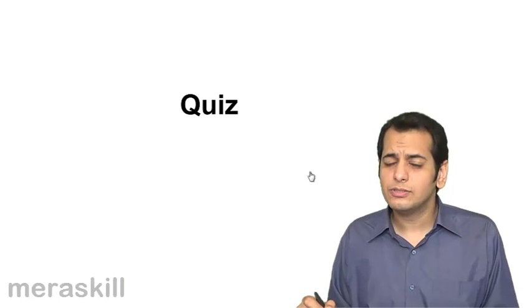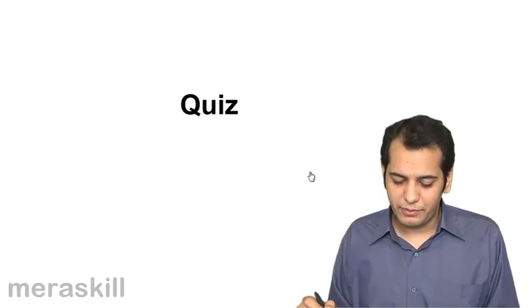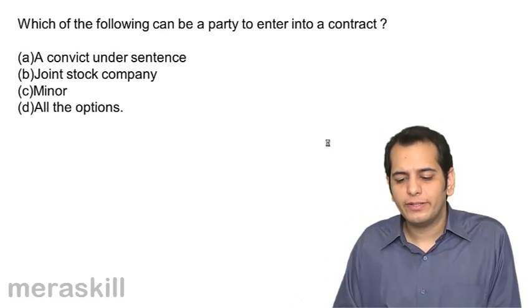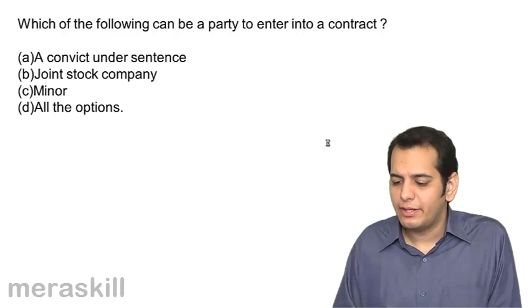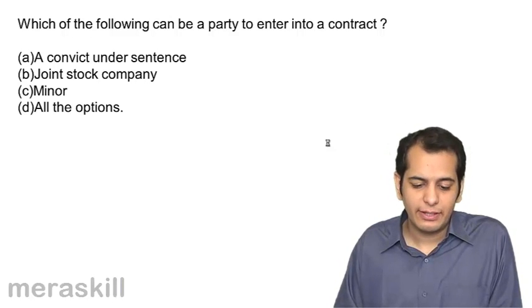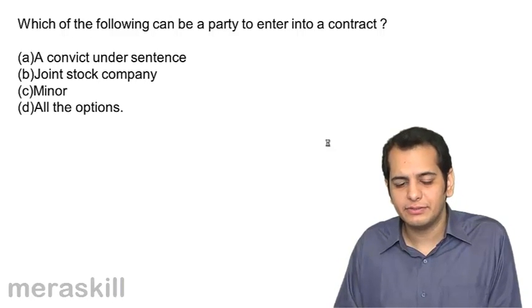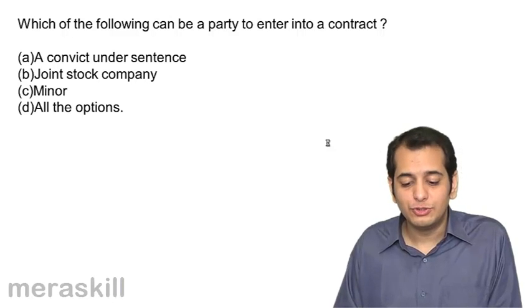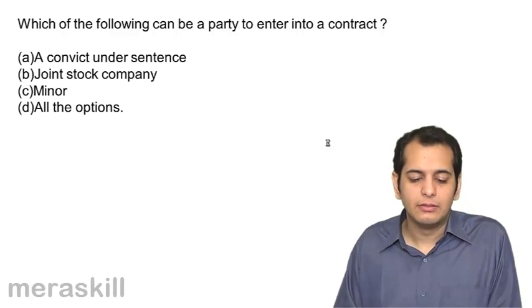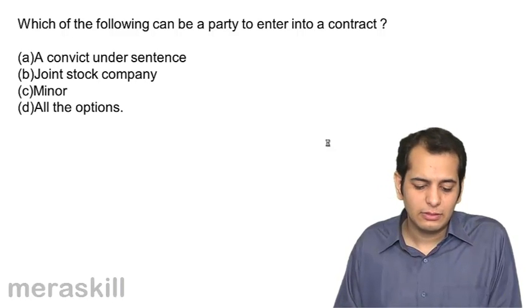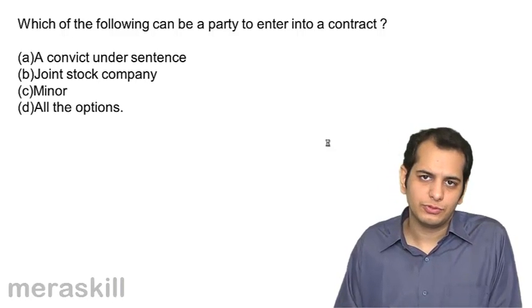Let's take a short quiz on this topic. Which of the following can be a party to enter into a contract? A. A convict under sentence. B. A joint stock company. C. Minor. D. All the options.